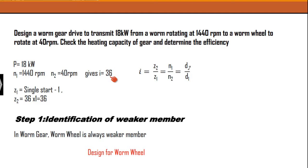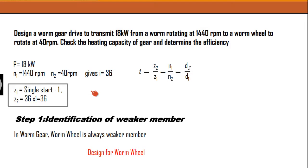Z1 indicates the number of starts. Here I am starting with Z1 as 1, a single-start thread — a normal cylindrical worm with one thread, not an enveloping type. So Z1 is stated as 1. Therefore Z2 must be equal to the velocity ratio multiplied by Z1, giving Z2 = 36. These two values are obtained using the basic fundamental equations.